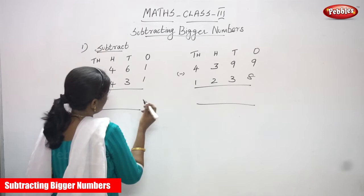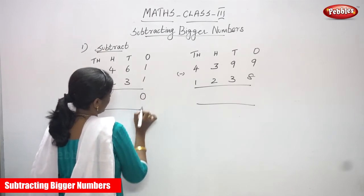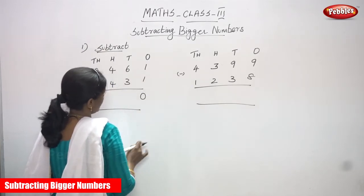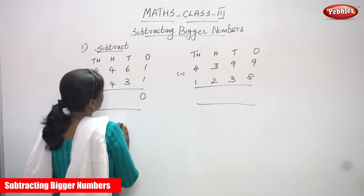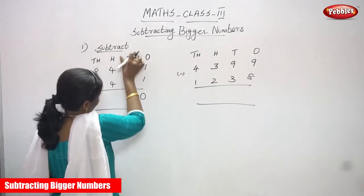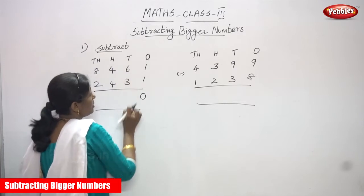So 1 minus 1 is zero. There is no borrowing. Now I'm going to subtract in the tens place value.